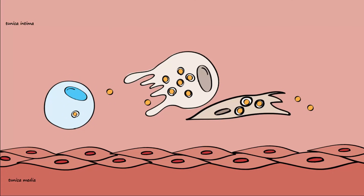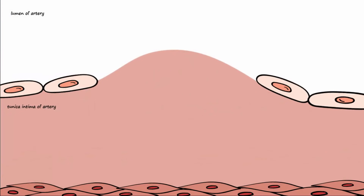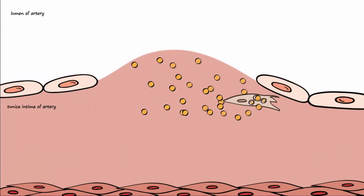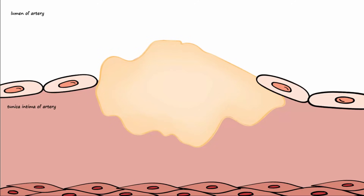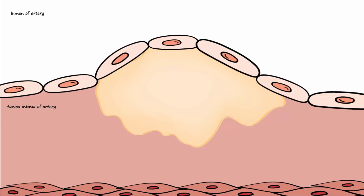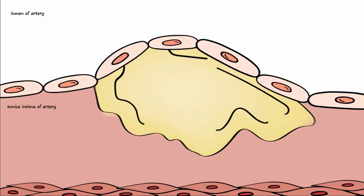Please note that the animation shows smooth muscle cells also engulfing LDL cholesterol. Eventually, the accumulating lipid from the processes just described and the fragments of dead cells produce an area with a lipid core that begins to form a plaque. Endothelial cells cover the plaque. The plaque accumulates calcium salts and more dead cells over time, and it will harden. This plaque in the arterial wall is atherosclerosis.